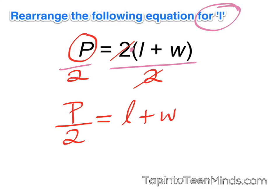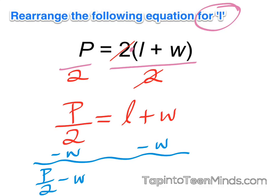So instead of the full perimeter, we now have half of the perimeter. From here, we can now isolate l by doing the opposite operation, which is subtracting on both sides, and we're left with p over 2 minus w equals l.